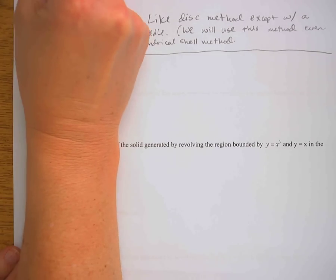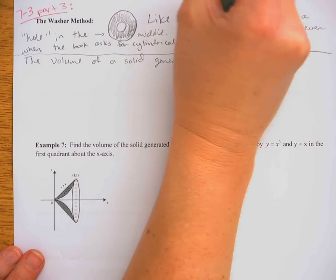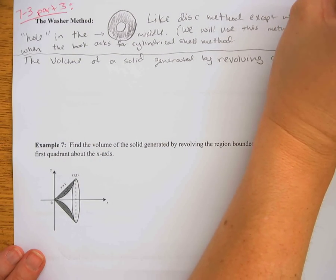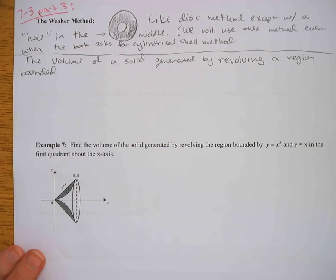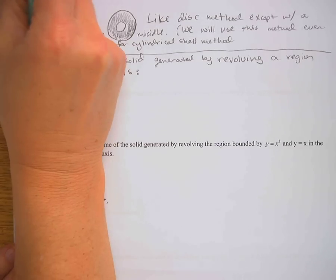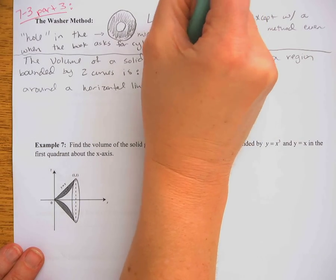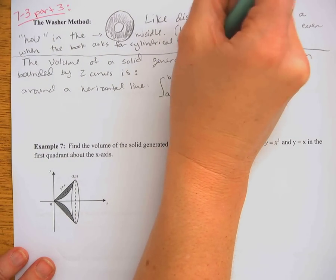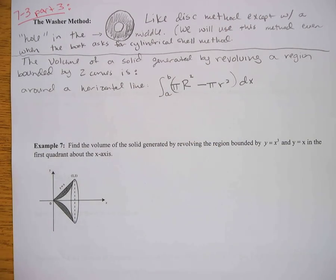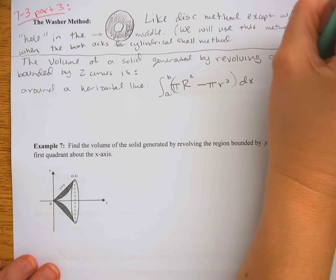The volume of a solid generated by revolving a region bounded by two curves — which is usually what causes the washer to happen — is as follows. If you're revolving around a horizontal line, you're going to integrate from a to b, which is from left to right, of pi times the big radius squared minus pi times the little radius squared, with respect to x. Big R is basically just the bigger radius, and little r is the smaller radius.